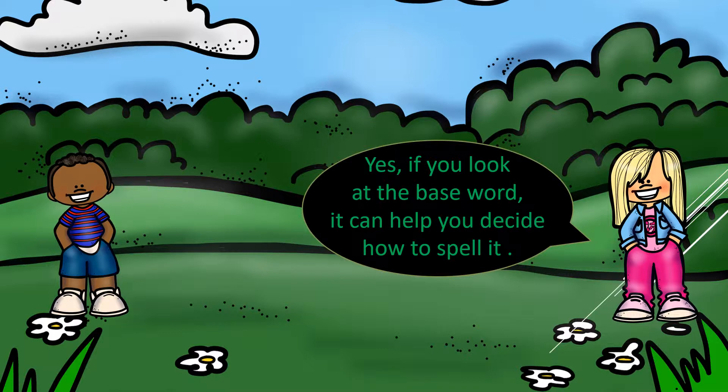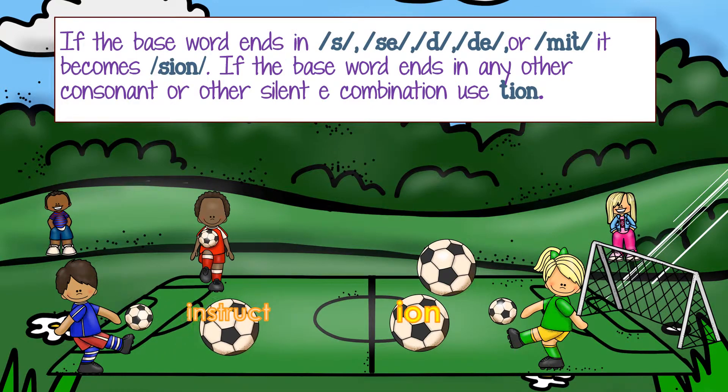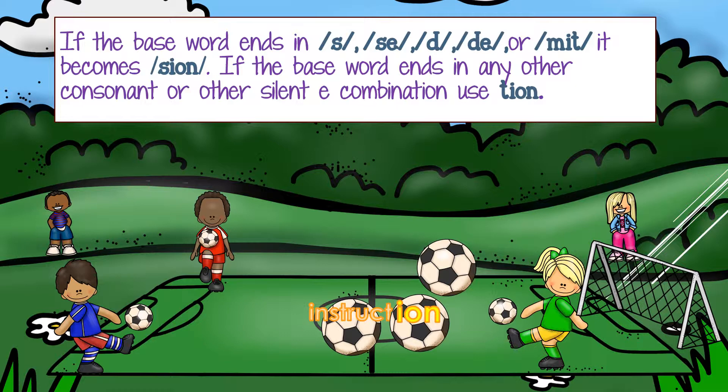Yes, if you look at the base word it can usually help you decide how to spell it. If a base word ends in S, S-E, D, D-E, or M-I-T, it becomes S-I-O-N, 'shun.' If the base word ends in any other consonant or other silent E combination, we use T-I-O-N.